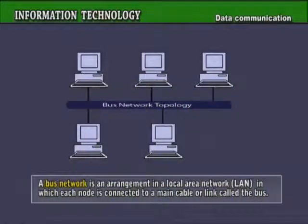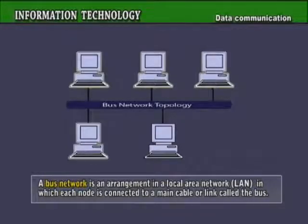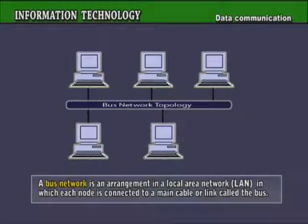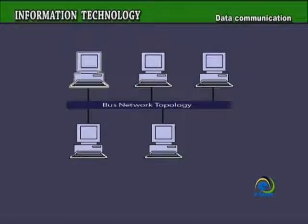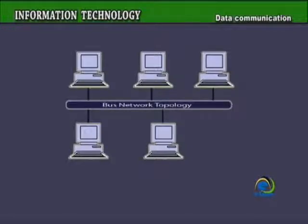A Bus Network is an arrangement in a local area network (LAN) in which each node, workstation, or other device is connected to a main cable or link called the bus. The illustration shows a bus network with five nodes. The bus appears as a heavy horizontal line and connections to the bus appear as vertical lines.